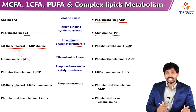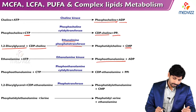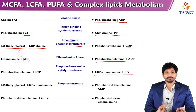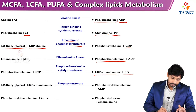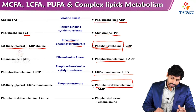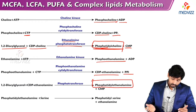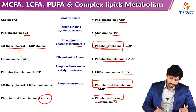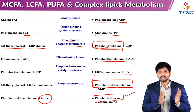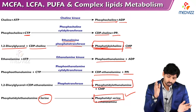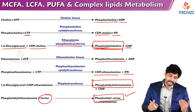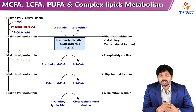Ethanolamine reacts with ATP via ethanolamine kinase to form phosphoethanolamine and ADP. Phosphoethanolamine combines with CTP via phosphoethanolamine cytidyltransferase to form CDP-ethanolamine and inorganic pyrophosphate. Then 1,2-diacylglycerol is added to CDP-ethanolamine by phosphotransferase to form phosphatidylethanolamine. When amino acid serine is added to phosphatidylethanolamine, phosphatidylserine is synthesized with removal of ethanolamine. So serine and ethanolamine are interconvertible. The major phospholipids formed are phosphatidylcholine, phosphatidylethanolamine, and phosphatidylserine.